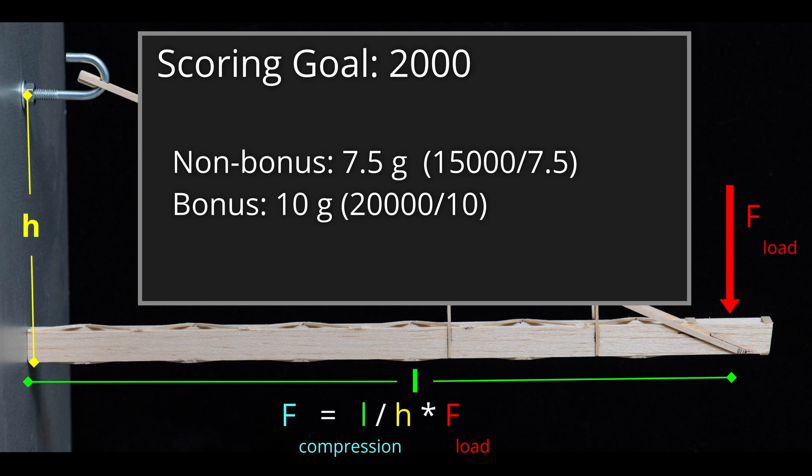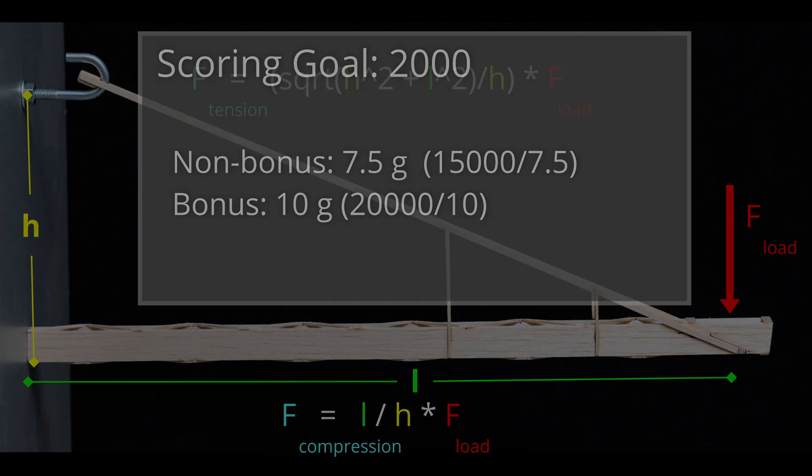If you are thinking that needing to withstand 50% more force with only a 33% increase in scoring potential is a problem, you are correct. The math alone says we should stay far away from the bonus design this year, but because I had never built a 10 cm Boomi, I really wanted to try some and see how they worked. We'll see in a bit if my testing aligns with the theory.